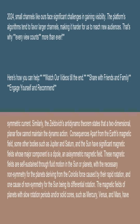Consequences: apart from the Earth's magnetic field, some other bodies such as Jupiter, Saturn, and the Sun have significant magnetic fields whose major component is a dipole — an axisymmetric magnetic field. These magnetic fields are self-sustained through fluid motion in the Sun or planets, with the necessary non-symmetry for the planets deriving from the Coriolis force caused by their rapid rotation, and one cause of non-symmetry for the Sun being its differential rotation.